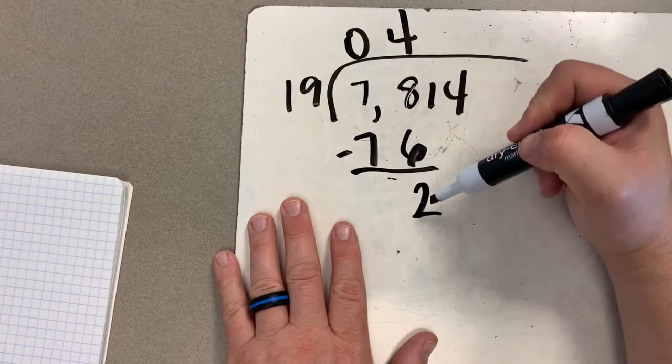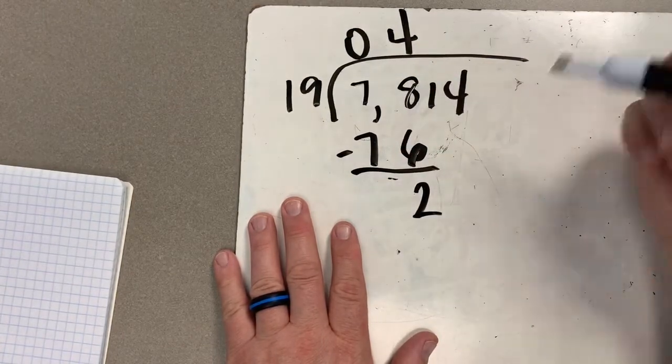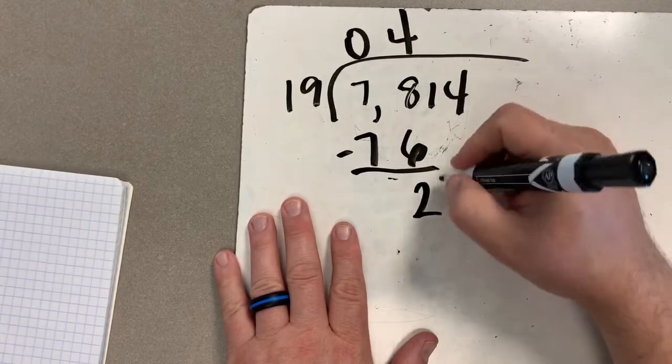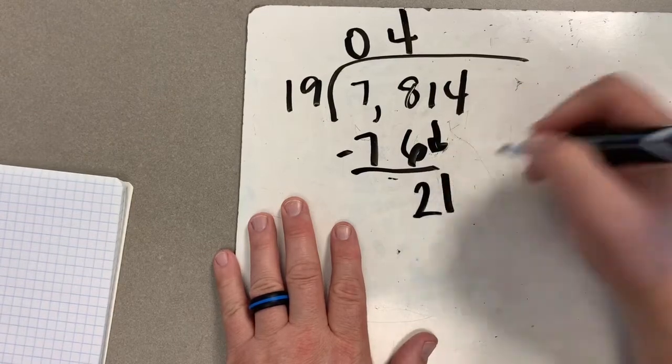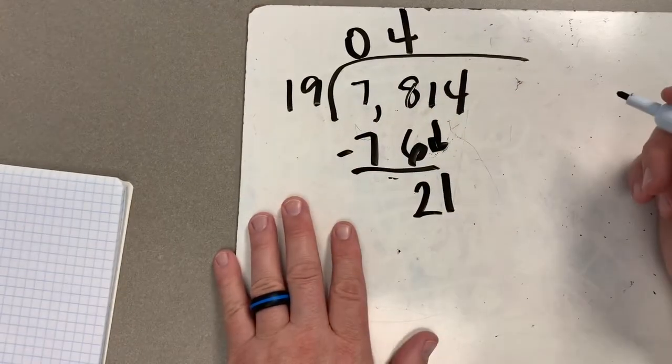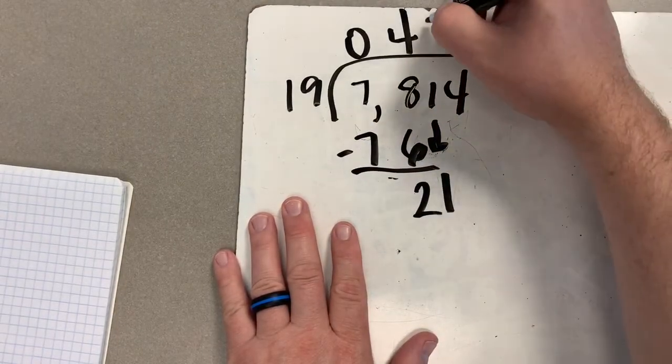Now I need to check and make sure my two is less than 19. It is, so I am good on that step. I'm going to bring my next digit down. Can I take 19 out of 21? I can. Again, I can take one group of 19 out.